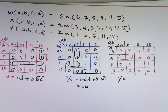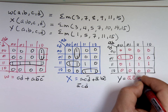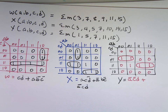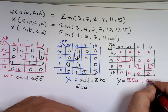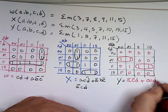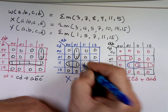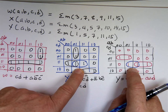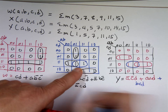For Y: there's one group which gives ĀC̄D. There's another group that gives ACD. Now I'm trying to group the remaining ones — it looks like the only way to group them is: if I take this one this way and that one this way, I can use the same gate for both. So I waited on that grouping from X, and now I can add BCD to both sides — it's the same gate shared between X and Y.